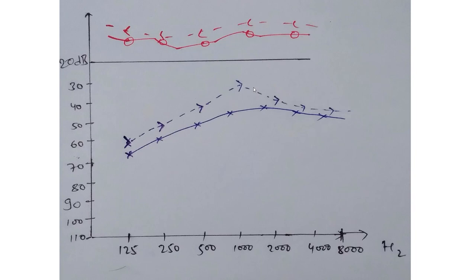Sometimes there can be mixed hearing loss, so you need to calculate the air-bone gap as well. Meniere's disease presents with vertigo, hearing loss, tinnitus, and unilateral sensorineural hearing loss. This low-frequency sensorineural pattern on the audiogram is characteristic of that condition.